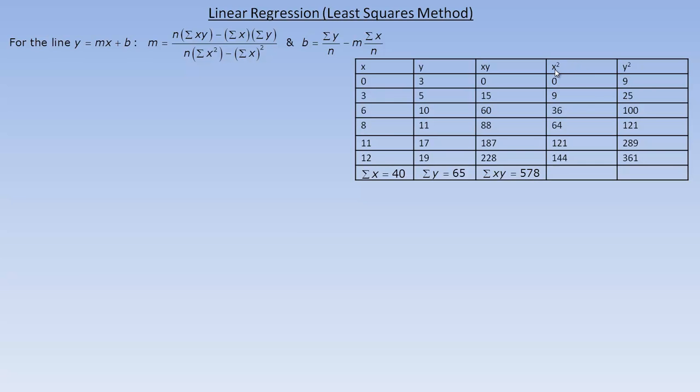This says we square all the x's. 0 squared is 0. 3 squared is 9. 6 squared would be 36. 8 squared, or 8 times 8 is 64. 11 times 11, or 11 squared is 121. And 12 squared is 144. We add all those up, and that's the sum of all the x squareds, 374.